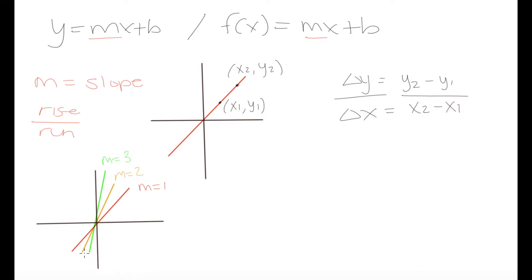When we increase the slope, the gradient of the line increases, and with a very high slope we almost get a vertical line. This makes sense: a very high slope means a large change in rise and a small change in run — a large change in y values with little change in x values. We can see that with the green line here.